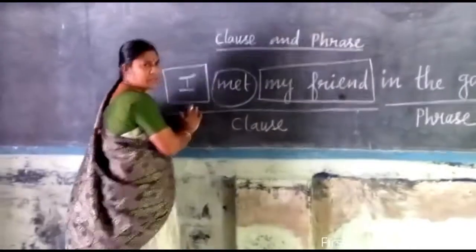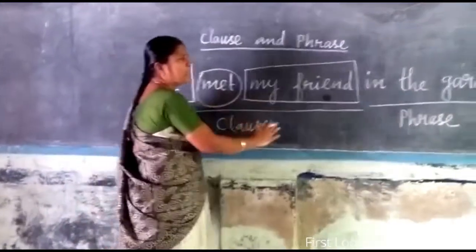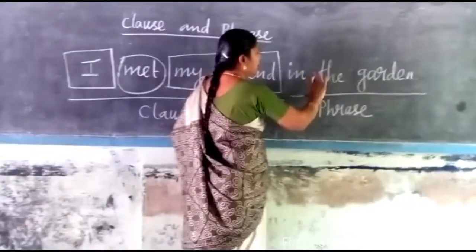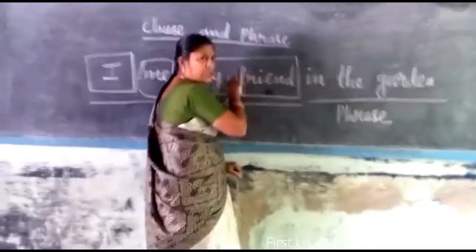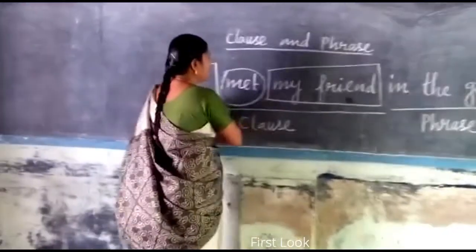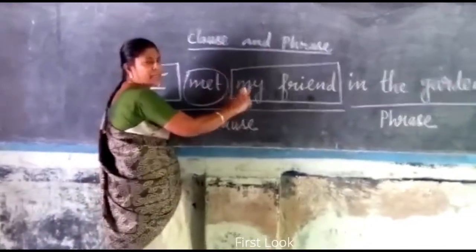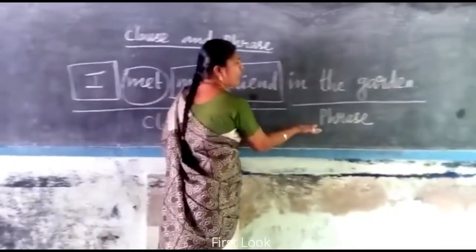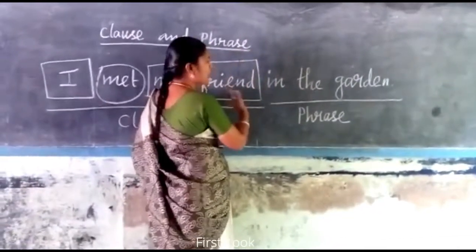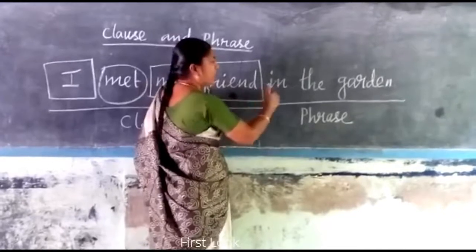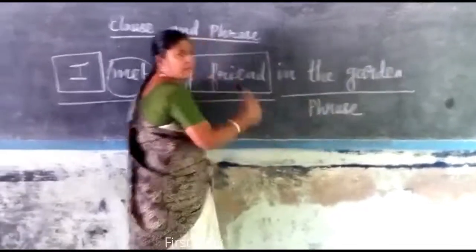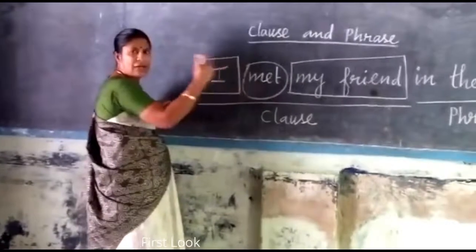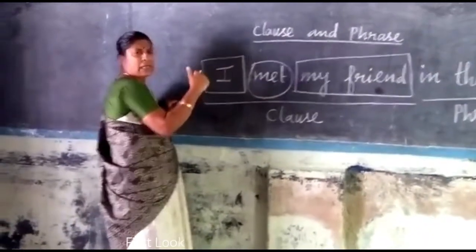The clause is in the form of subject, verb, and object — it has a sentence pattern. The phrase does not have a sentence pattern. It gives additional information to the clause. The phrase gave additional information that 'I met my friend in the garden.' The work of the phrase is to give additional information to the clause.